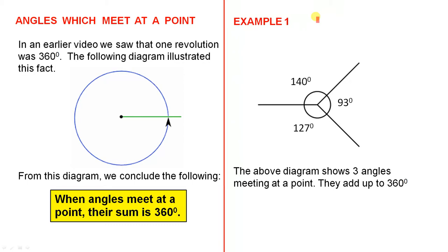Now, here is the first example, and this diagram illustrates that rule. We have the point here, and we have three lines meeting at this point, which means that we have three angles which are formed.